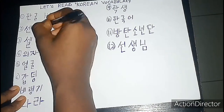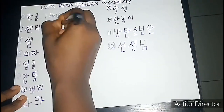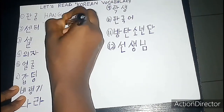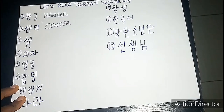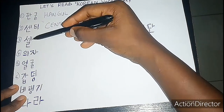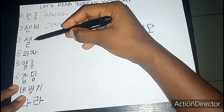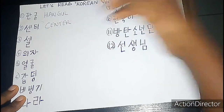This is 'center' — center. Like, 'I want to be in the center of the room.' And this is 'cell' — cell.